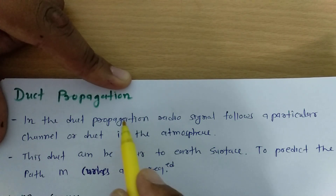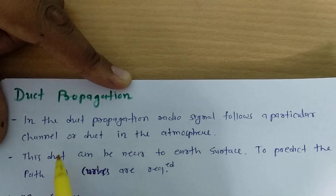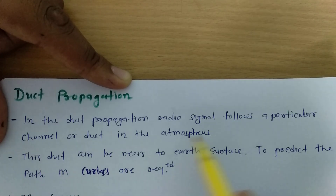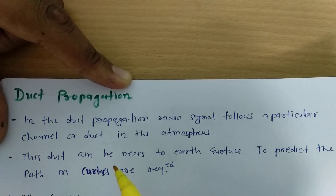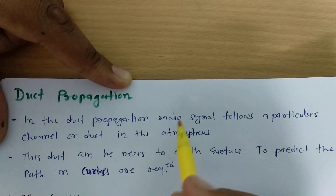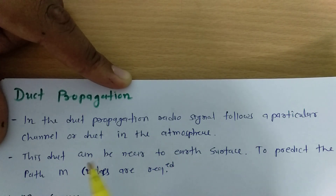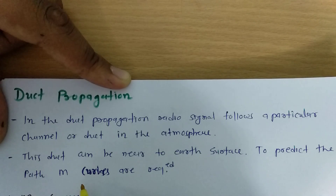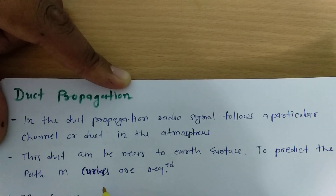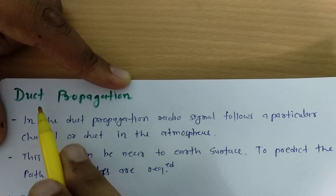Duct propagation of a radio signal follows a particular channel or duct in the atmosphere. When duct propagation is happening, it is following a channel that is referred to as a duct. To understand what a duct channel is, we need to understand what M-curves are.